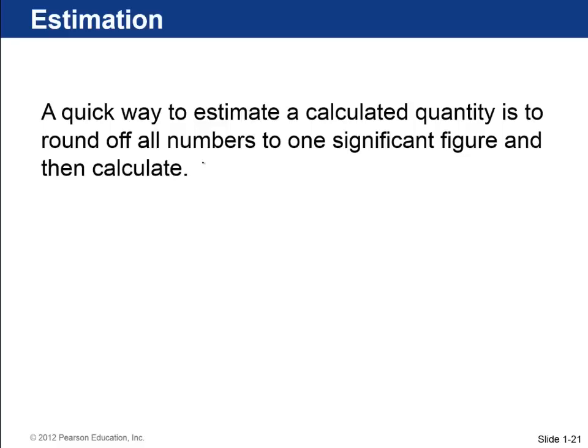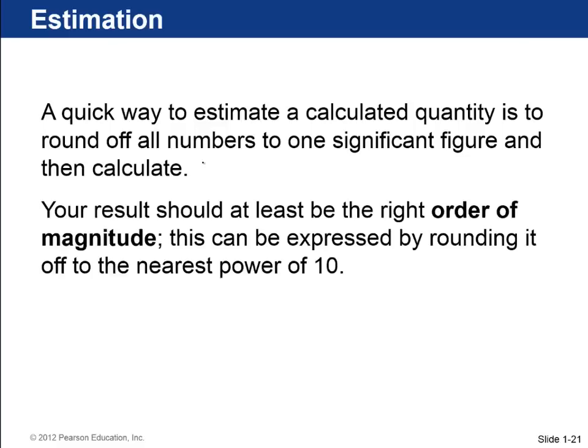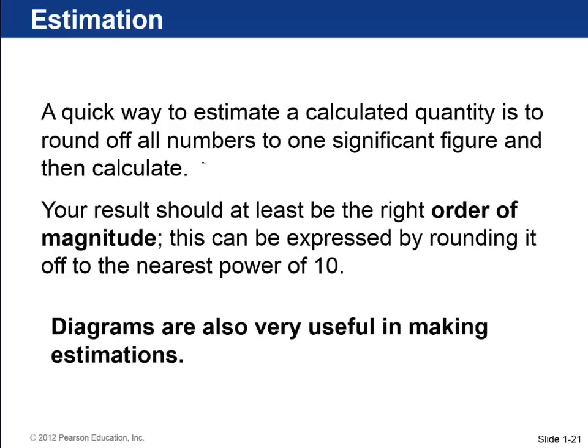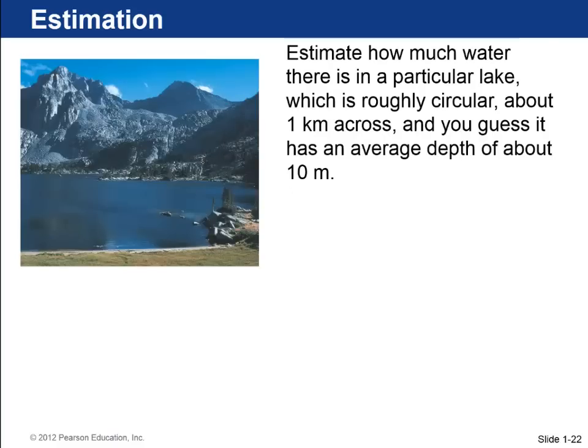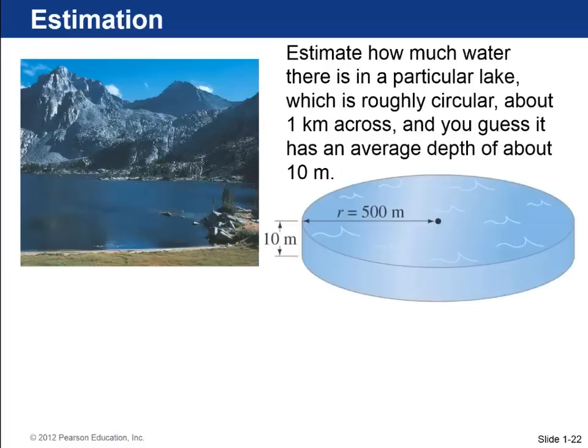Okay, estimation. So this is important in physics, is being able to estimate something to an order of magnitude. An order of magnitude means a factor of 10. So if you can get to within a factor of 10, that's a very crude estimate. And diagrams can be really useful here. So let's do an example. Let's say you're asked to estimate how much water is in this lake. And we know that the lake is about a kilometer across. And we kind of guess, maybe from swimming or from dropping a fishing line, that the depth is approximately an average of about 10 meters. So how much water is that? Well, you can draw a diagram. 10 meters deep, 500 meters radius.